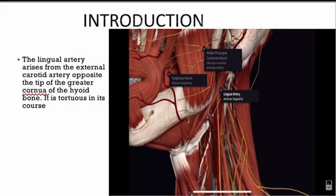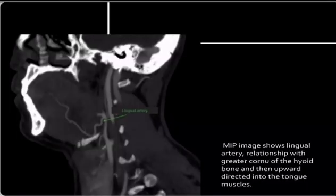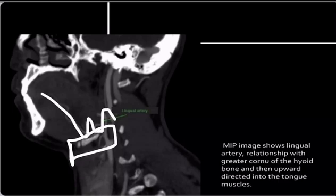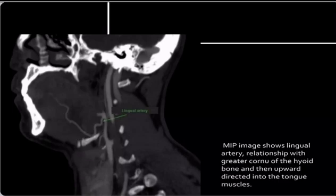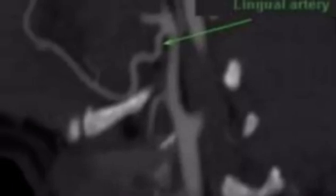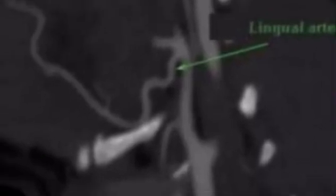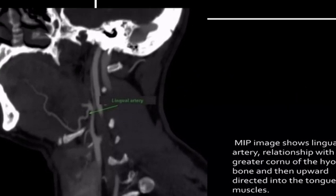So the first introduction: it is a branch of the external carotid artery, given off opposite to the tip of the greater cornu of the hyoid bone, and it is tortuous in course. In the diagram you can see the hyoid bone and the lingual artery, which is tortuous in course.